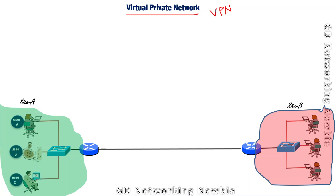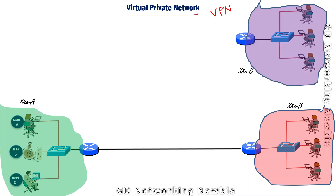If site A wants to communicate with another site, say site C, they again need to install a new dedicated leased line between them, and then they can securely exchange messages with each other. In the future, if they want to connect with site D, they need to establish yet another dedicated link between site A and site D.